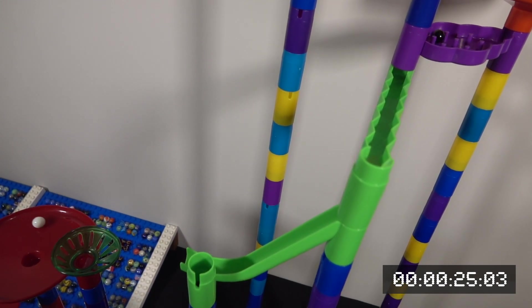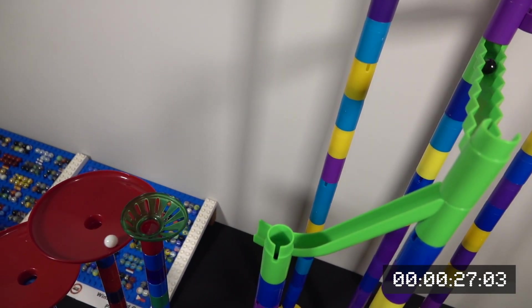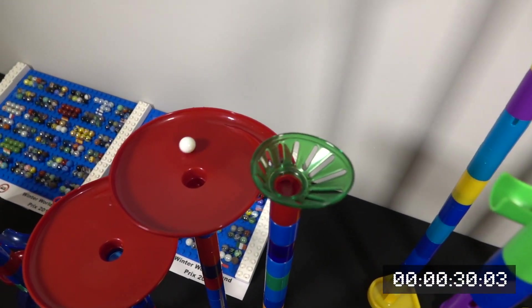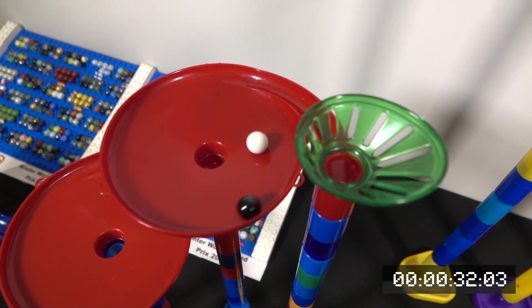PewDiePie is still struggling to get down that first funnel while T-Series has a pretty good lead in the first half of the race. PewDiePie going down that ramp and into fall number two along with T-Series.